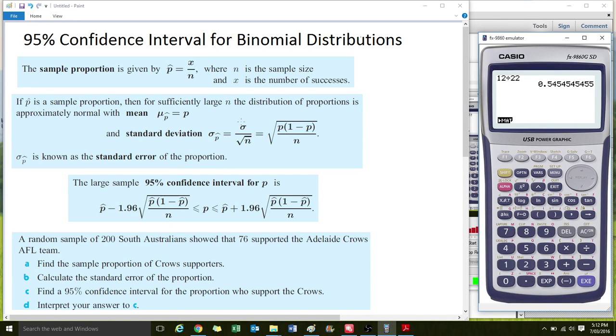If P is a sample proportion then, for sufficiently large N, the distribution of proportions is approximately normal with mean equals P. So this is similar to the central limit theorem in normal distributions. And what that's saying is as N gets larger, the mean gets more accurate, and so this sample proportion approximates the proportion of the whole distribution.